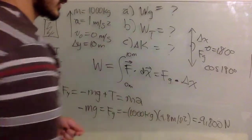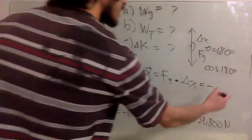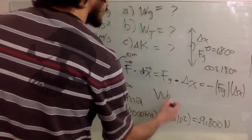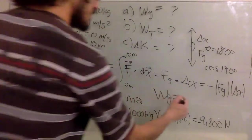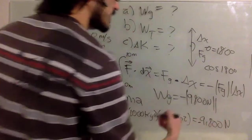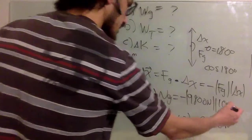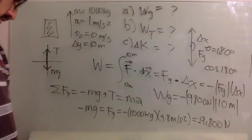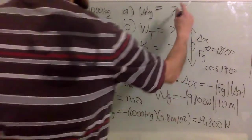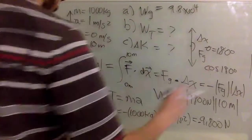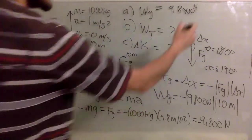So this dot product is minus the magnitude of Fg times the magnitude of delta x. The work due to gravity is minus 9,800 Newtons times 10 meters, which is going to be — with the calculator — negative 9.8 times 10 to the 4 joules.